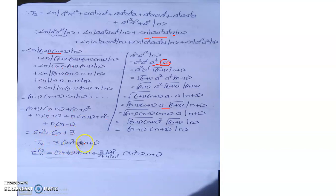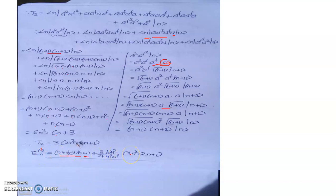The energy of the anharmonic oscillator in the nth quantum state, corrected to first order, is therefore the harmonic oscillator energy n plus half times h-bar omega, plus a correction term equal to 3b h-bar squared over 4m squared omega squared, times the quantity 2n squared plus 2n plus 1. For the ground state, setting n equal to 0 gives the first-order energy correction for the anharmonic oscillator in the zeroth quantum state.